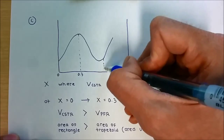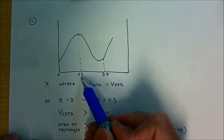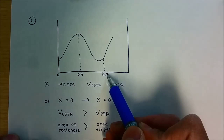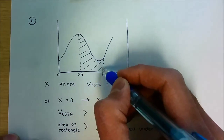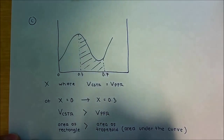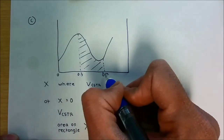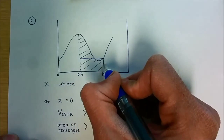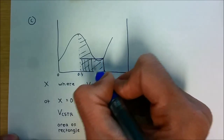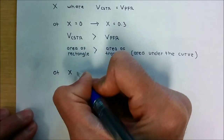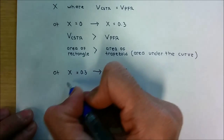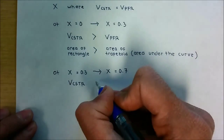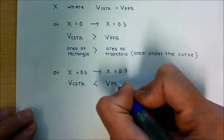Looking at the conversion range between X = 0.3 and X = 0.7: if we use a PFR we calculate the area under the curve, but if we use a CSTR we calculate the area of a small rectangle. This means between X = 0.3 and X = 0.7, the volume of the CSTR is always smaller than the volume of the PFR.